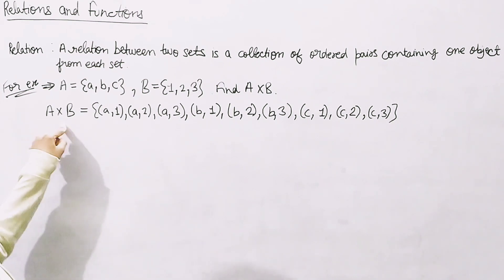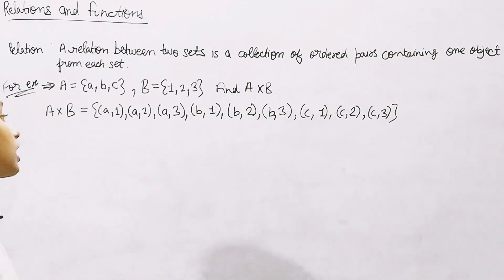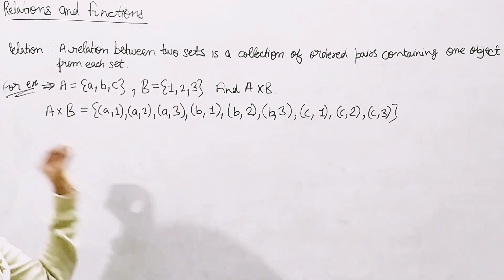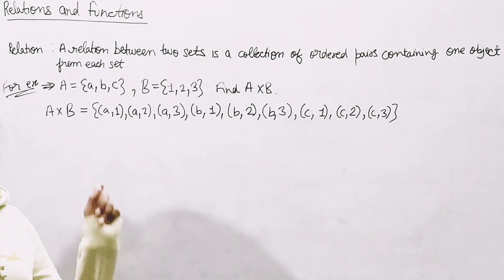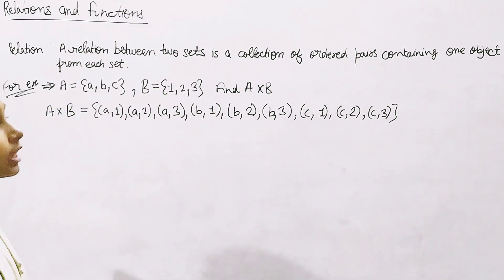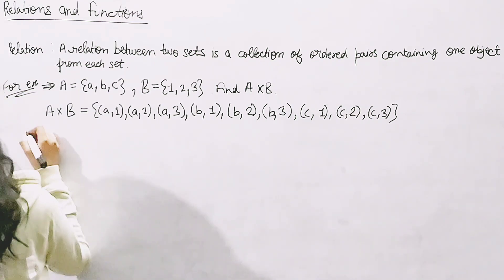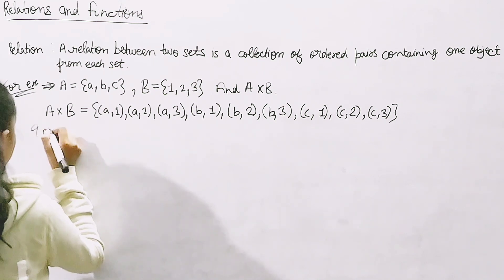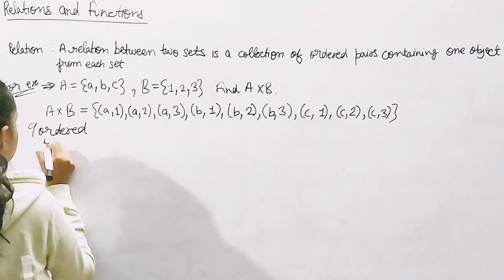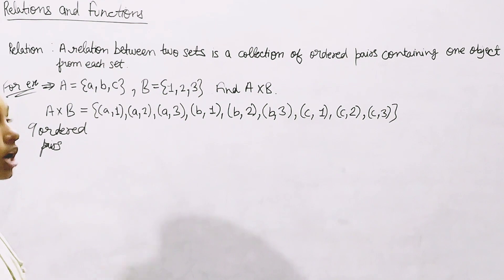So we have nine ordered pairs in A cross B — first the elements of Set A, then the elements of Set B. We can obtain a subset of A cross B by including a relation R. That subset is what we call a relation R.